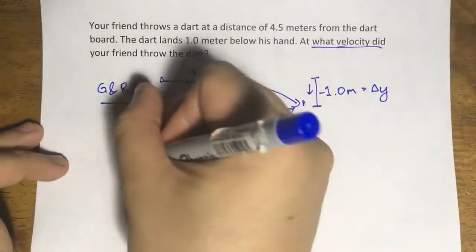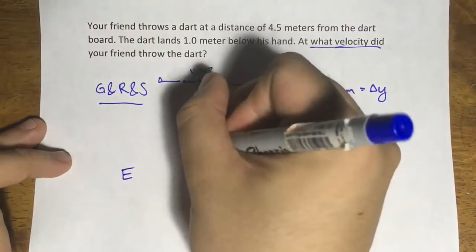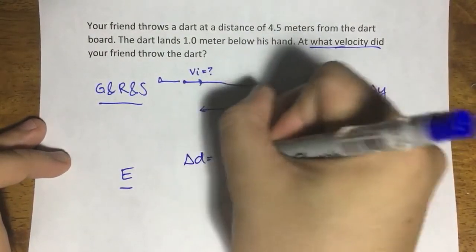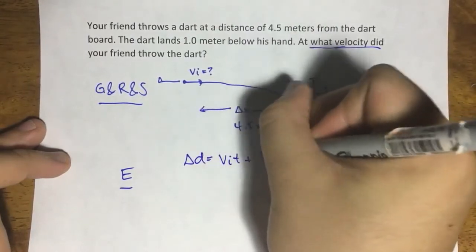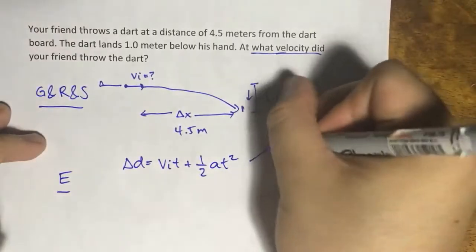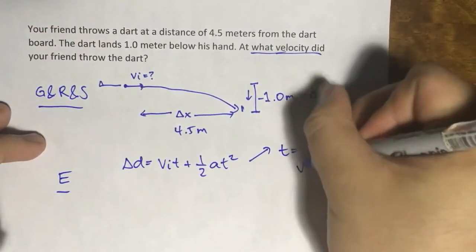Now in terms of equation for time, we'll only use one equation. It's displacement is equal to vit plus one half at squared. However, for time, it's simply 2 delta y over a, square root.